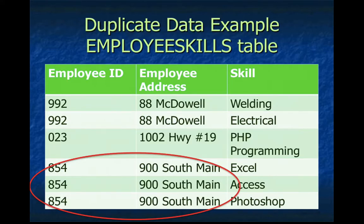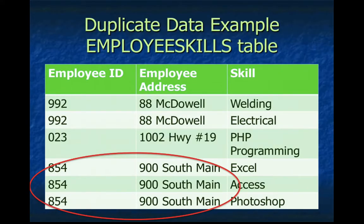Let's take a look at this database. We have a table called employee skills, so our boss is trying to figure out who knows how to use which program. Employee ID is the first field. You can see that employee number 854 knows how to use Excel, Access, and Photoshop. However, the database is not set up right because we have South Main Street listed three times as the address. Suppose employee number 854 decides to move and then South Main Street is listed dozens of times in our database — it needs to be updated dozens of times. That's a bad design.